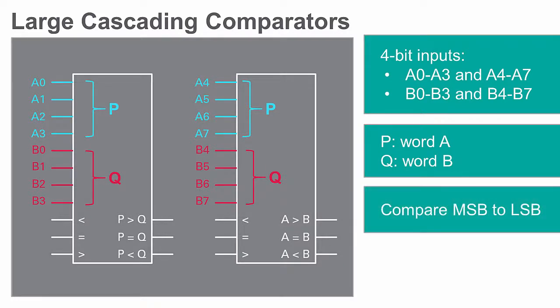The magnitude comparator begins by comparing the highest order bit, or MSB, first and then works its way down from the next highest bit until it reaches the lowest order bit, or LSB.